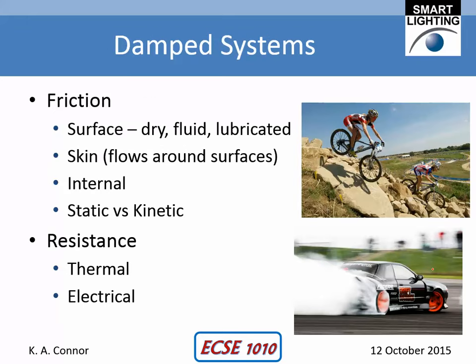Some examples of damped systems: any dynamic system with friction. That can be surface friction, either dry friction, just two surfaces sliding against one another. They can be lubricated. There can be fluids flowing on surfaces.